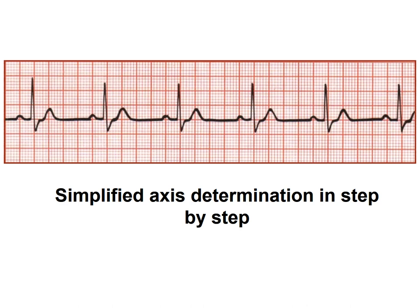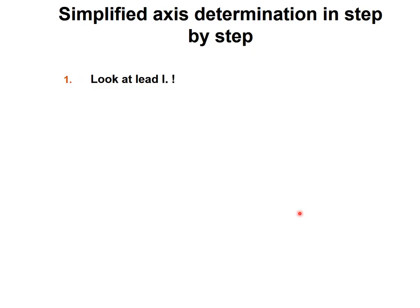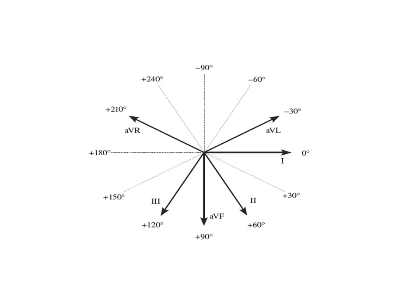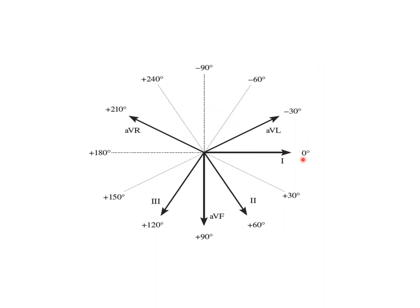I'm going to show you a simplified axis determination step by step. First, how we start the evaluation — we have to look at lead number 1. If lead number 1 is positive, the axis is located on the left side. If lead number 1 is negative, the axis is located on the right side.